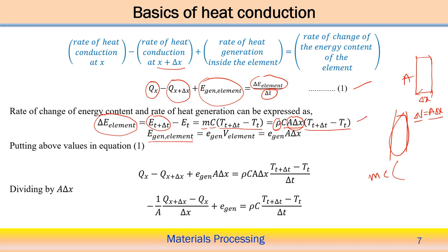Substituting back: q_x minus q_(x+Δx) plus Ė_gen·A·Δx equals ρ·c·A·Δx·(T(t+Δt) − T(t)) / Δt. Dividing through by A and manipulating, we get: −(1/A)·(q_(x+Δx) − q_x)/Δx + Ė_gen equals ρ·c·(T(t+Δt) − T(t))/Δt. Applying the limits as Δx → 0 and Δt → 0, we can convert the finite differences to derivatives.